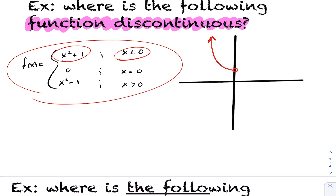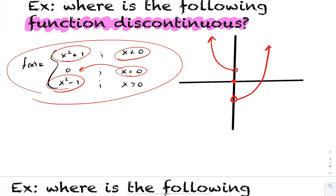Because it's less than 0, we have an open circle. As soon as it hits 0, the function takes on a value of 0. Then for x greater than 0, we have the quadratic x squared minus 1. Previously we defined a point as being discontinuous as just having a hole or break in the graph.